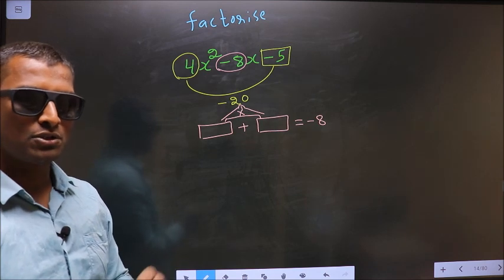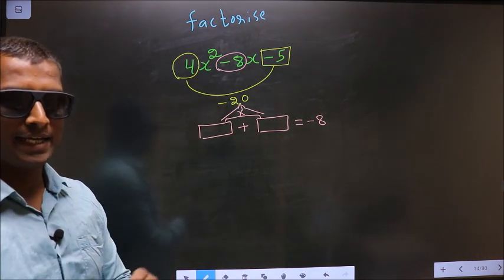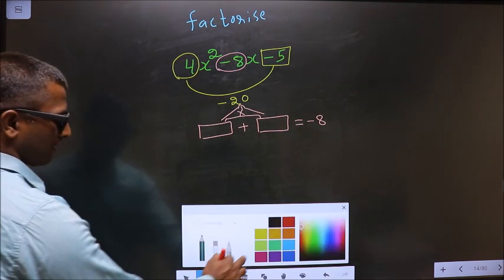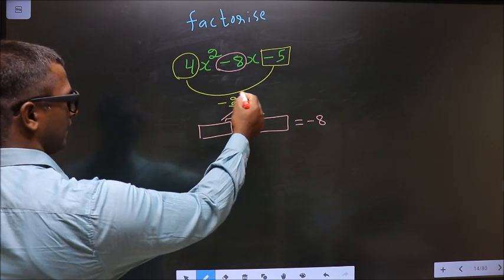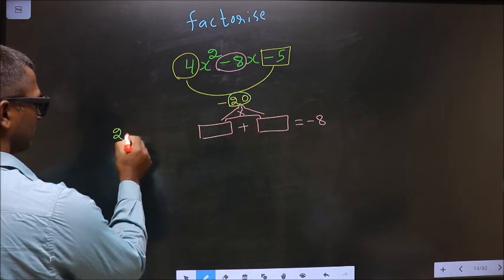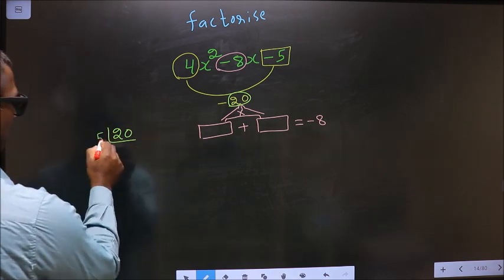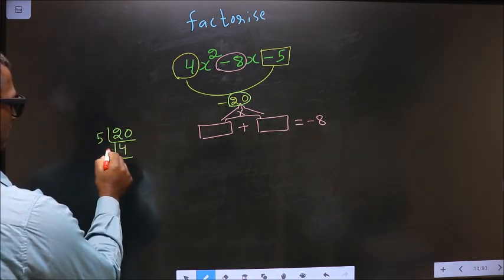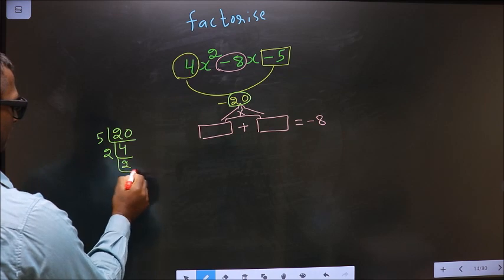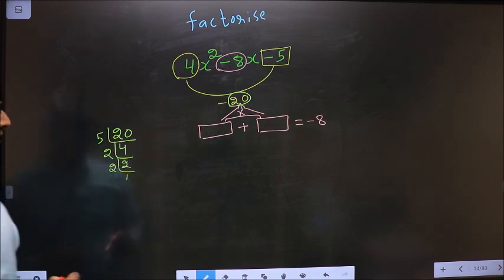Now to get those two numbers, we should take LCM of 20. So I start with 5: 5, 4s, then 2, 2s, 2 and 1.